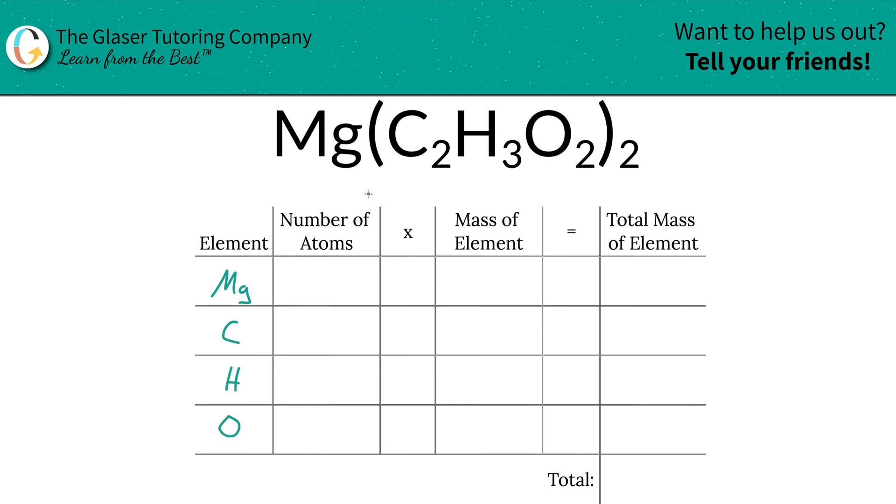Next is to find the number of atoms. That's where the subscripts come into play. The subscript of magnesium is one. There's only one magnesium. Now for carbon, careful. There are two carbons, but there's two carbons in the acetate anion, and you got two of those.